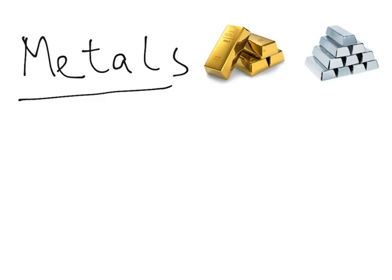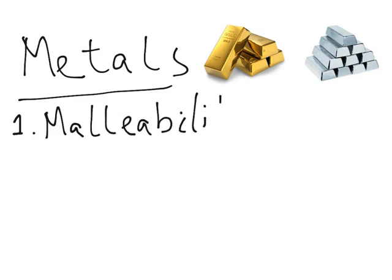The first property of metals is that they are malleable. Malleability is simply the ability of something to bend. A good example is that you can buy a silver watch and give it whatever shape you want. That is something very characteristic of metals.